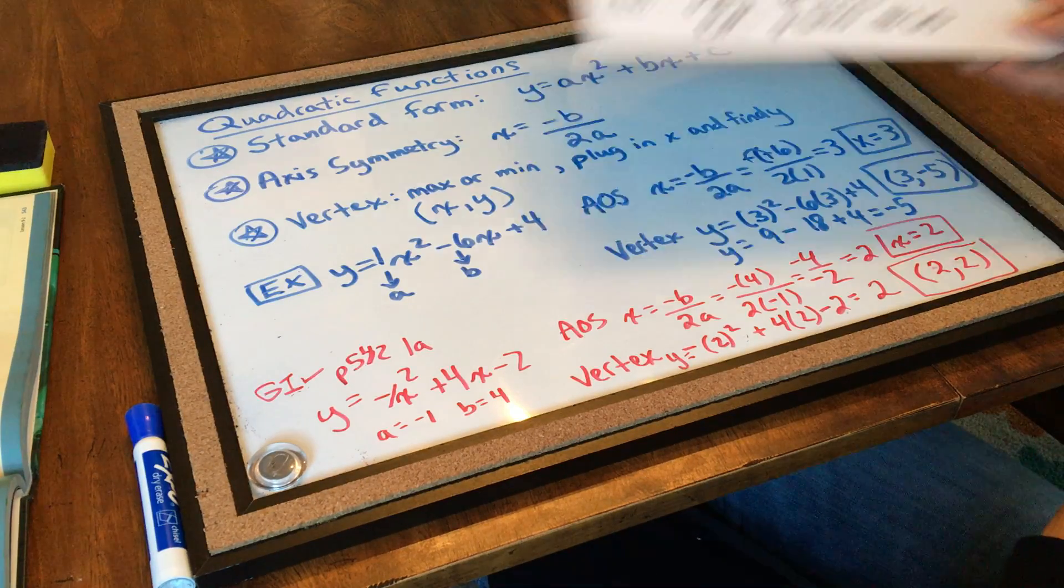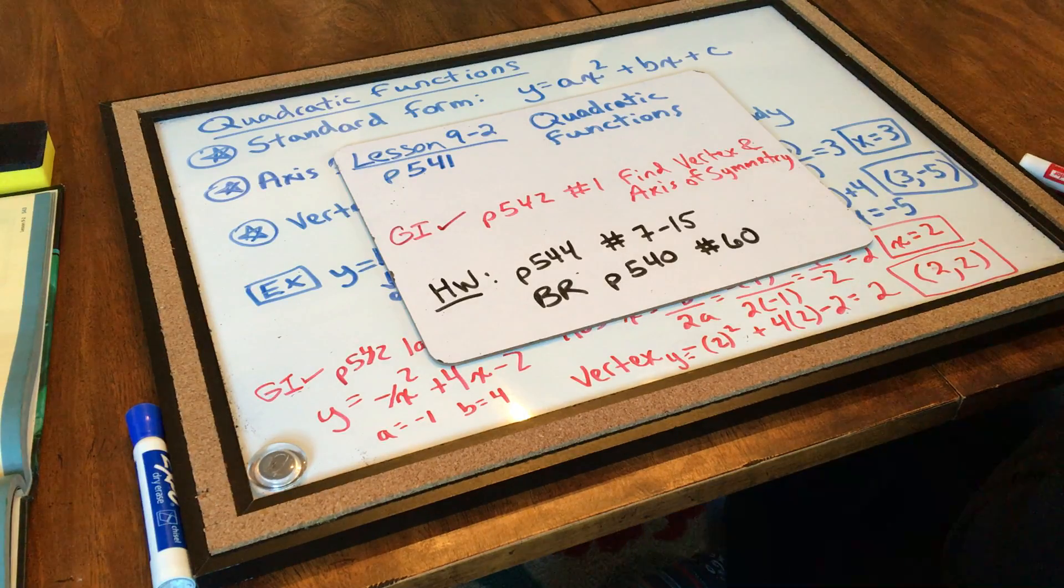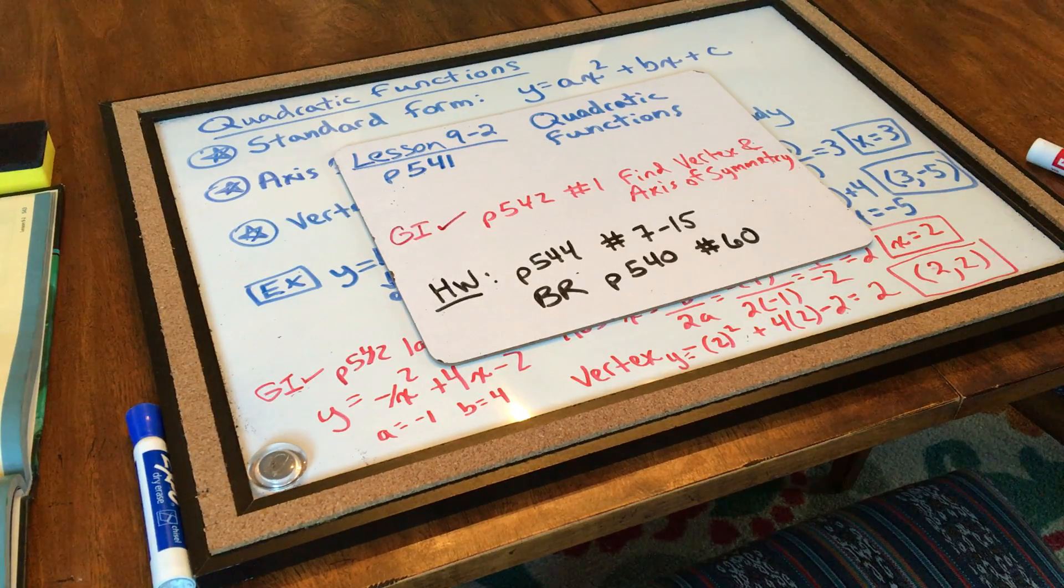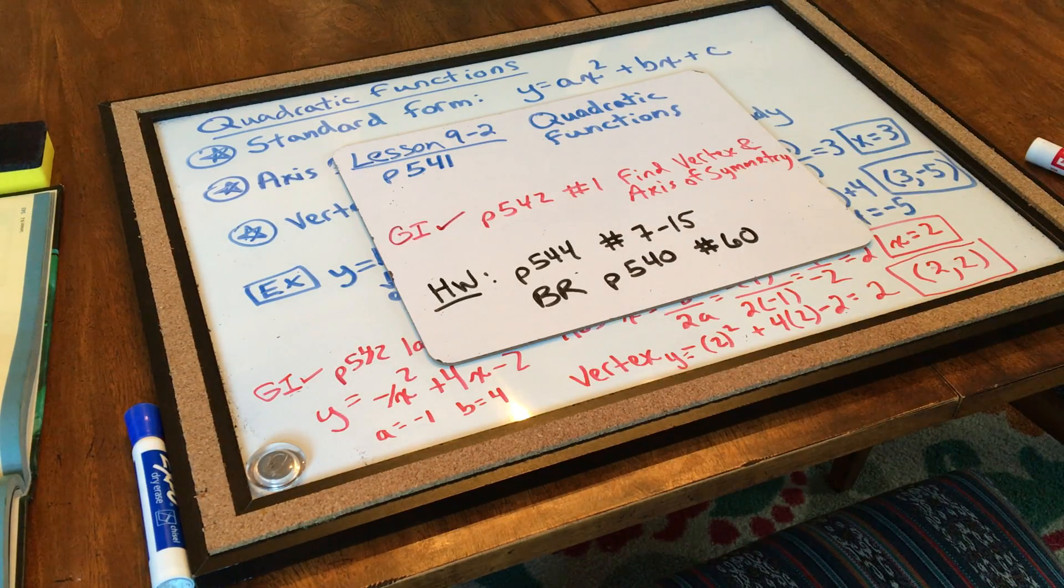All right. It's time to try your homework. So, remember, your homework is page 544, number 7 to 15. And, your bell ringer in three sentences, page 540, number 60. Bye, 8th grade. See you tomorrow.